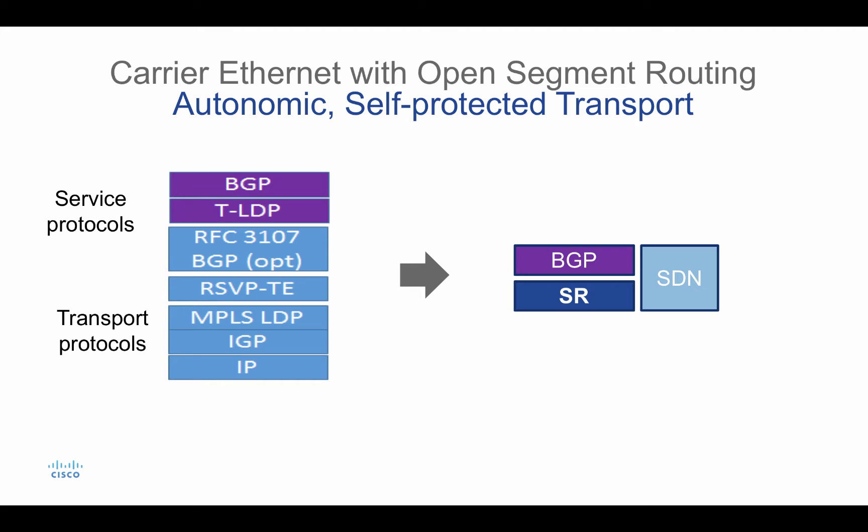The protocol stack on the left side is probably part of your network. From the bottom you can see IP, IGP and MPLS LDP for transport, RSVP-TE for traffic engineering, BGP-LU, and then for services LDP and BGP. With Ejakery Ethernet we can squeeze this protocol stack to Segment Routing for transport and BGP for services — and this we call an SDN-enabled network.